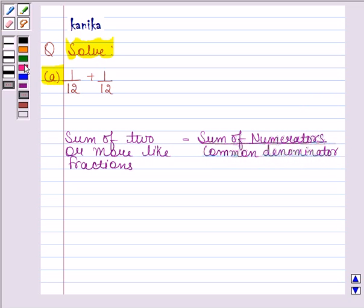Let's understand this by an example. If A by B and C by B are any two like fractions, then their sum, A by B plus C by B, is equal to A plus C by B.